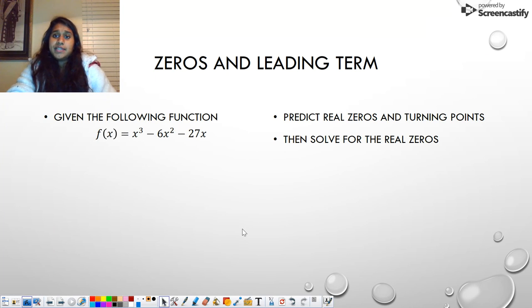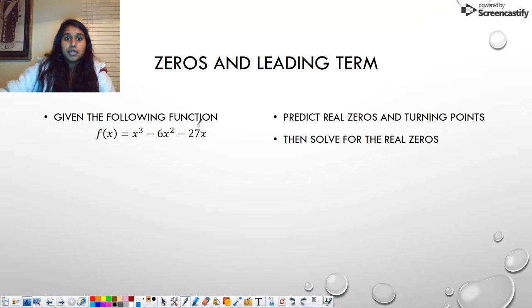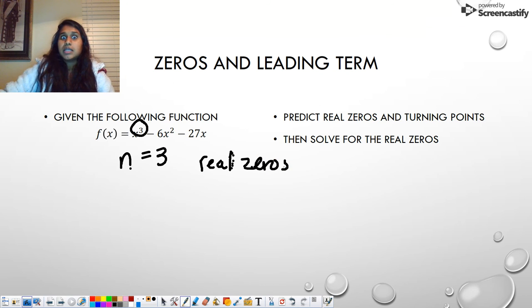Here's another one. Here's another example. So what are our real zeros and our turning points? Well, we've got to find that n value, right? So what is our largest exponent? It's this number right here. So that tells me N equals three. So if I'm looking at my real zeros, that's N. So that is at most three real zeros, right? And then at most, my turning points are going to be N minus one. So that's again, two. So we have a similar kind of problem here.